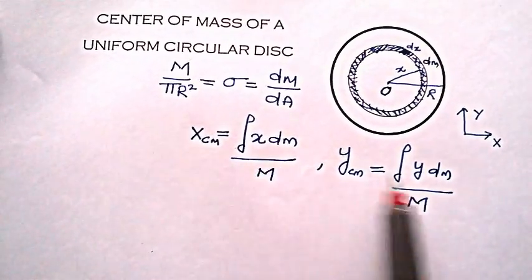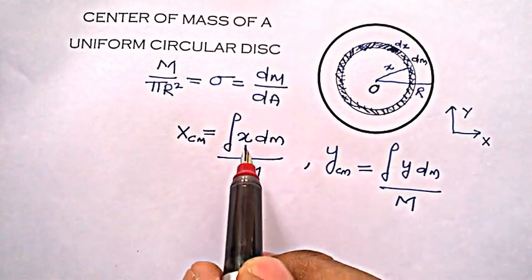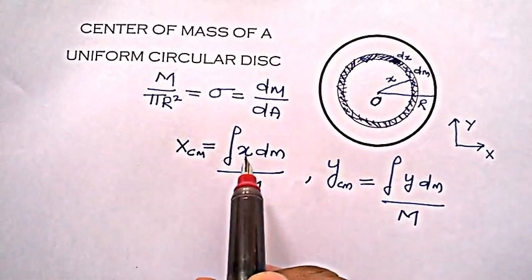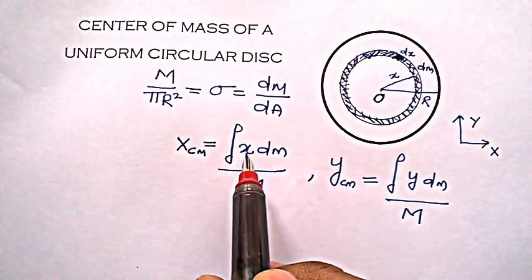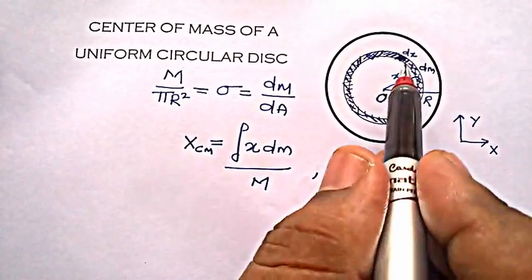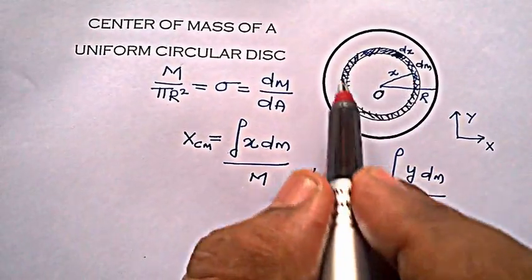Now what are these x and y? These x and y are the locations of center of mass, coordinates of center of mass along x and along y of this strip.